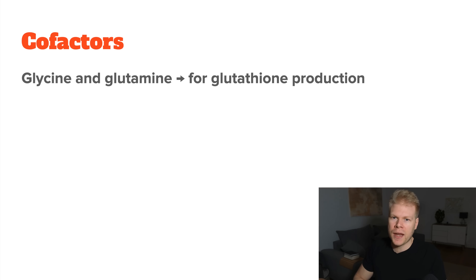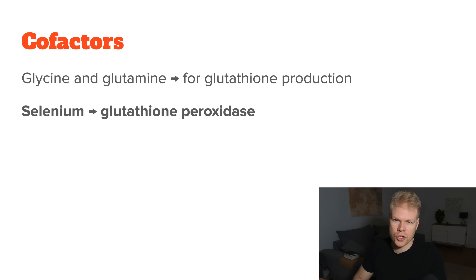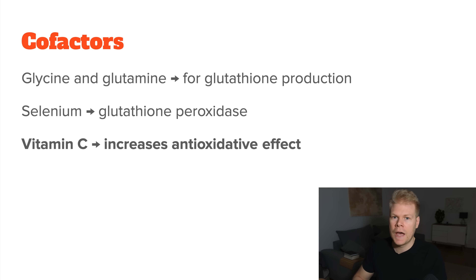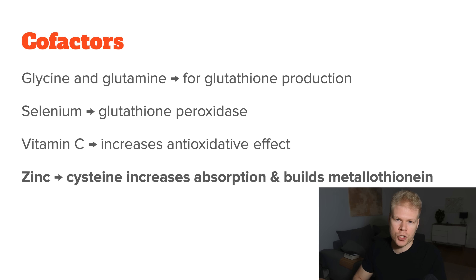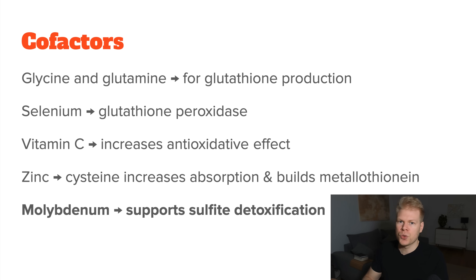As for other supplements that go well with NAC: glycine and glutamine are also needed to support glutathione production. Usually, if you consume enough protein these shouldn't be a problem, but in some people — for example, those with poor protein absorption — it still makes sense to take them. Other possible additions include selenium, which is essential for the activity of glutathione peroxidase; vitamin C, which works together with glutathione for even better antioxidant effects; and zinc, since cysteine improves zinc absorption and zinc and cysteine are key components of the detox protein metallothionein, which is extremely important for eliminating heavy metals. Some people also take molybdenum to support sulfide detoxification, especially if they notice sulfur sensitivity when using NAC. All of these are optional — see what applies to your individual case.